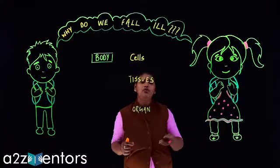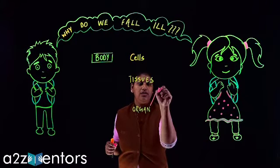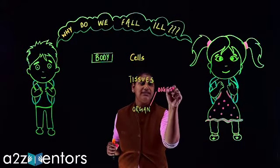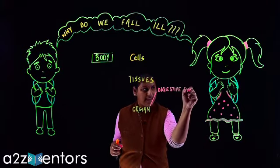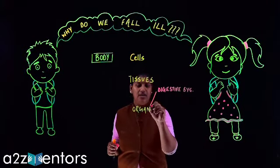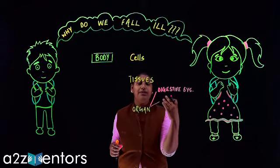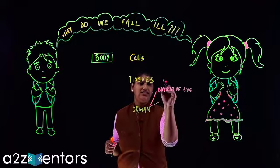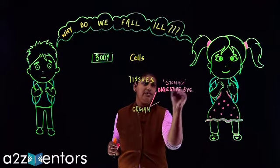So if I talk about organs, what all systems do I see connected with my organs? I have the digestive system. The digestive system - I can say stomach is the prime organ.